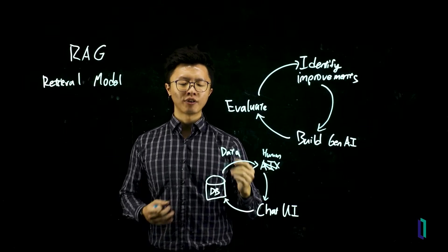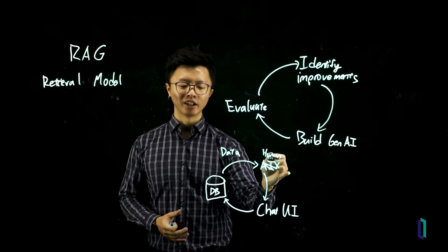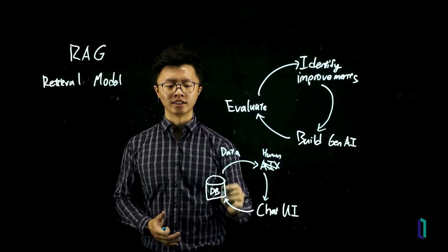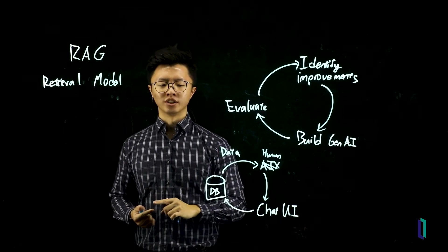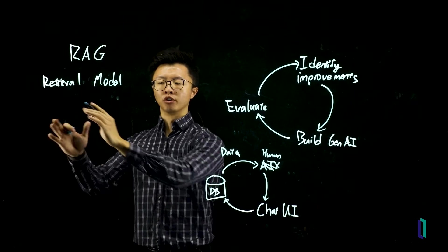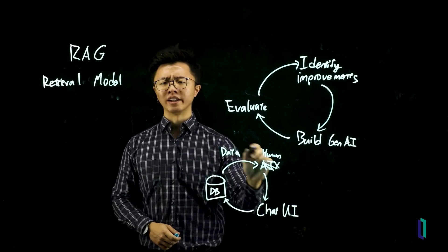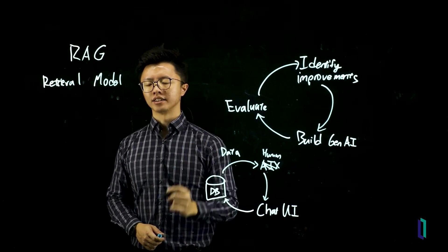On the other hand, if you find that even with this data, a human could not answer the question simply because the data was not good enough, or it was just simply irrelevant or insufficient, then your problem is with your retrieval. So this is a really simple way to identify what are the problems in your RAG.